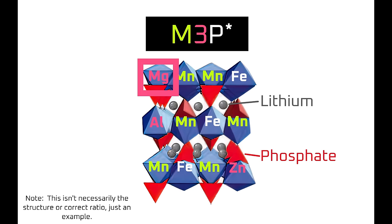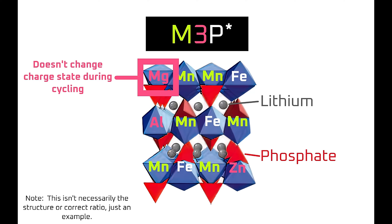So how does magnesium reduce Jahn-Teller effects? Instead of participating in the electrochemical reactions when the battery is charging and discharging, it remains in the same charge state while the electrochemically active manganese and iron cycle back and forth between 2+ and 3+ charge states. That has an anchoring effect on the crystal structure and prevents it from warping, and it only takes doping with a few percent of magnesium to achieve this.